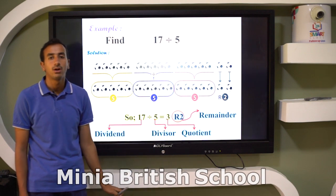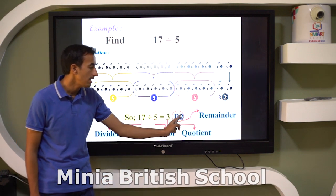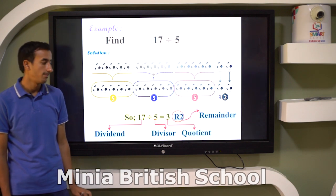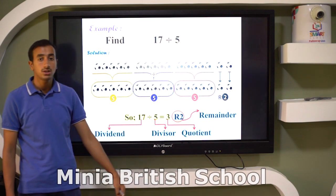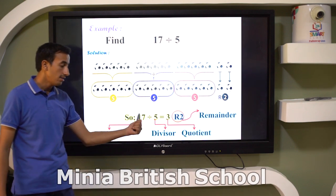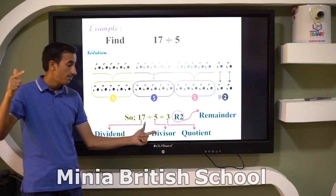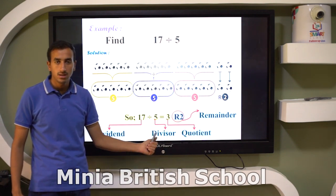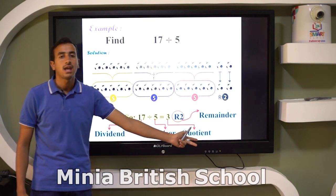After the answer we have R, which is the abbreviation for remainder. So the equation of division consists of four important notes: dividend, divisor, quotient, and remainder.